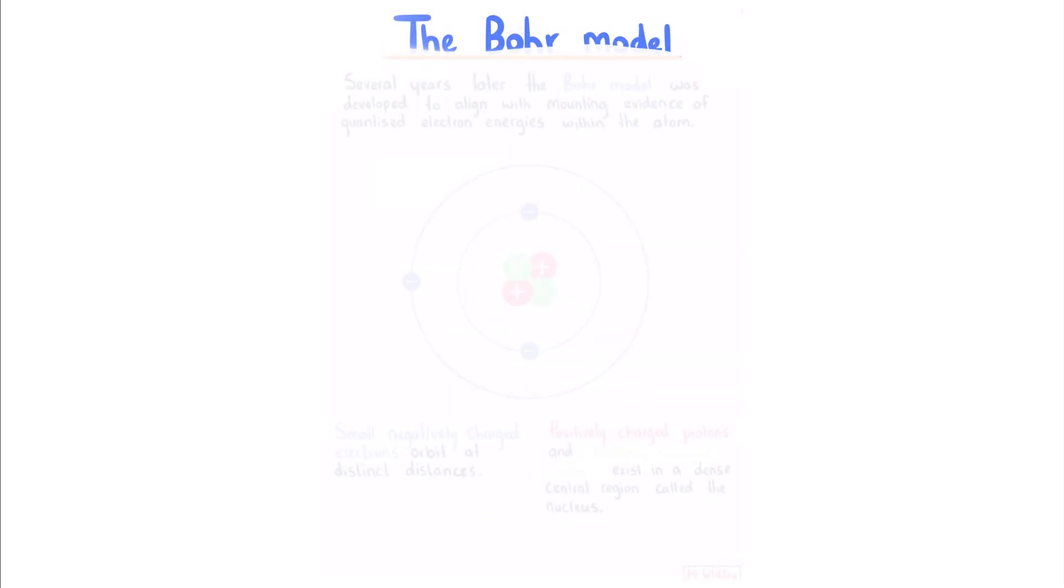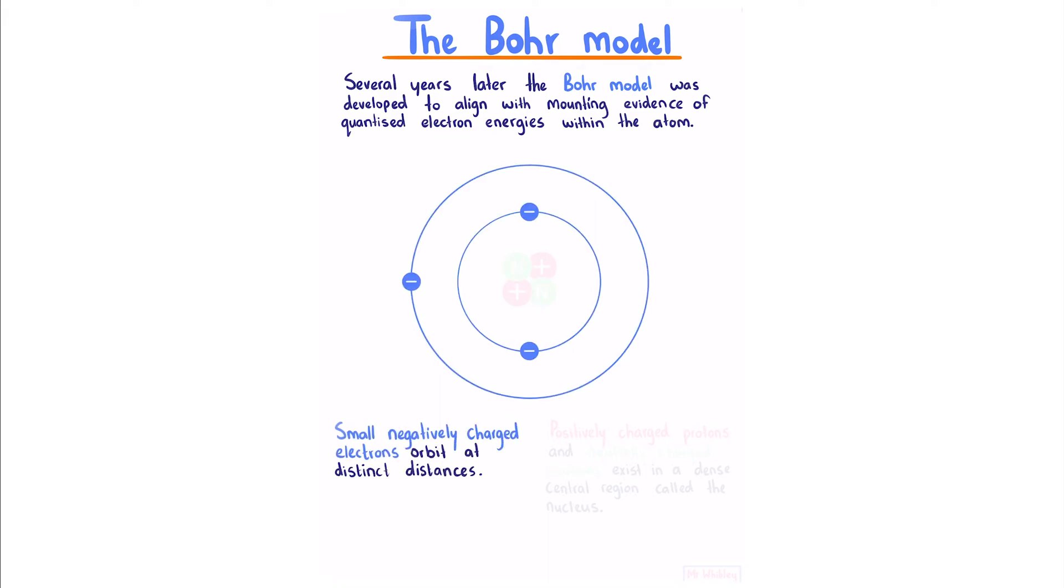The Bohr model: Several years later, the Bohr model was developed to align with mounting evidence of quantized electron energies within the atom. It consists of small negatively charged electrons orbiting at distinct distances, and positively charged protons and neutrally charged neutrons existing in a dense central region called the nucleus.